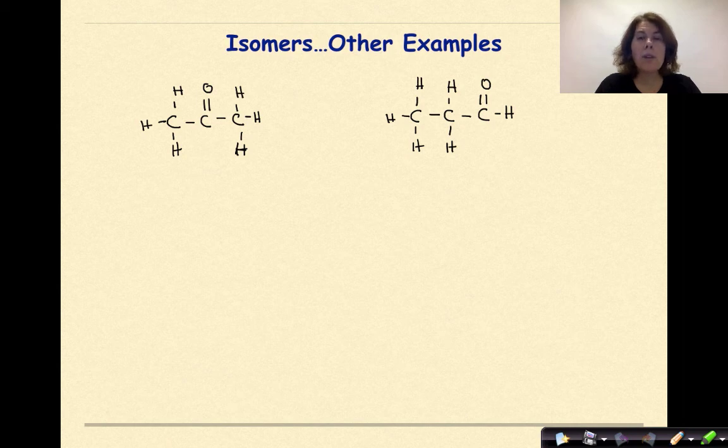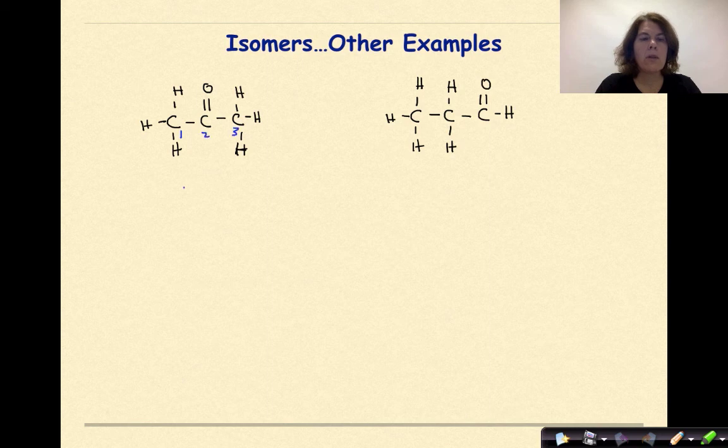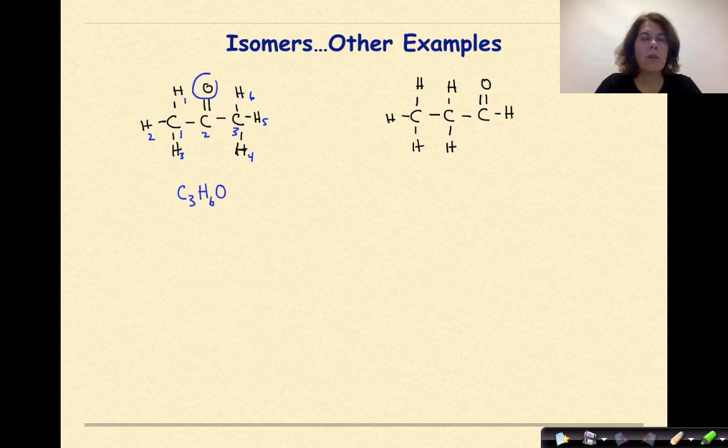Well, let's look at it. If I was to go through and count the number of carbons on the left, I would have one, two, three. So C3. Count the number of hydrogens. One, two, three, four, five, and six. So six hydrogens. And then one oxygen. Right here, there's my one oxygen.